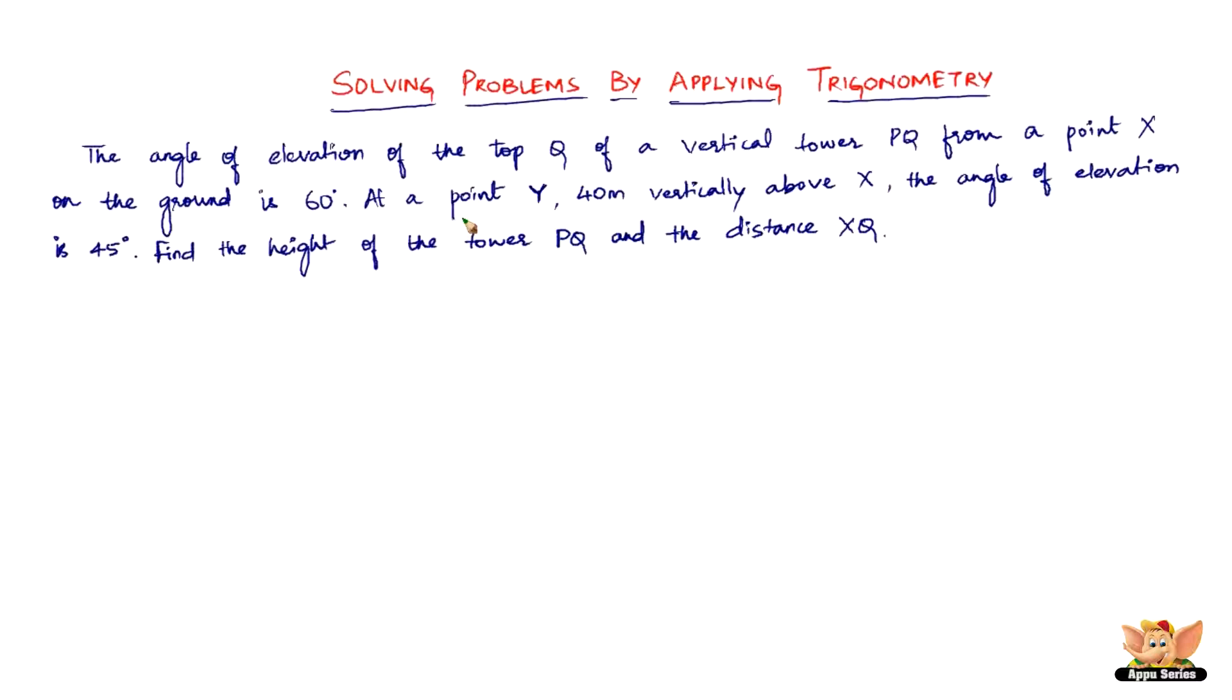Let's try to make this easier by drawing the required diagram to understand this problem. The first thing is the top Q of a vertical tower PQ, so let's get the vertical tower PQ first. Here it is, PQ. Now it says the angle of elevation of point Q from a point X on the ground. That point is somewhere here, this is X. It says it is 60 degrees. Let's join this, so this is 60 degrees.